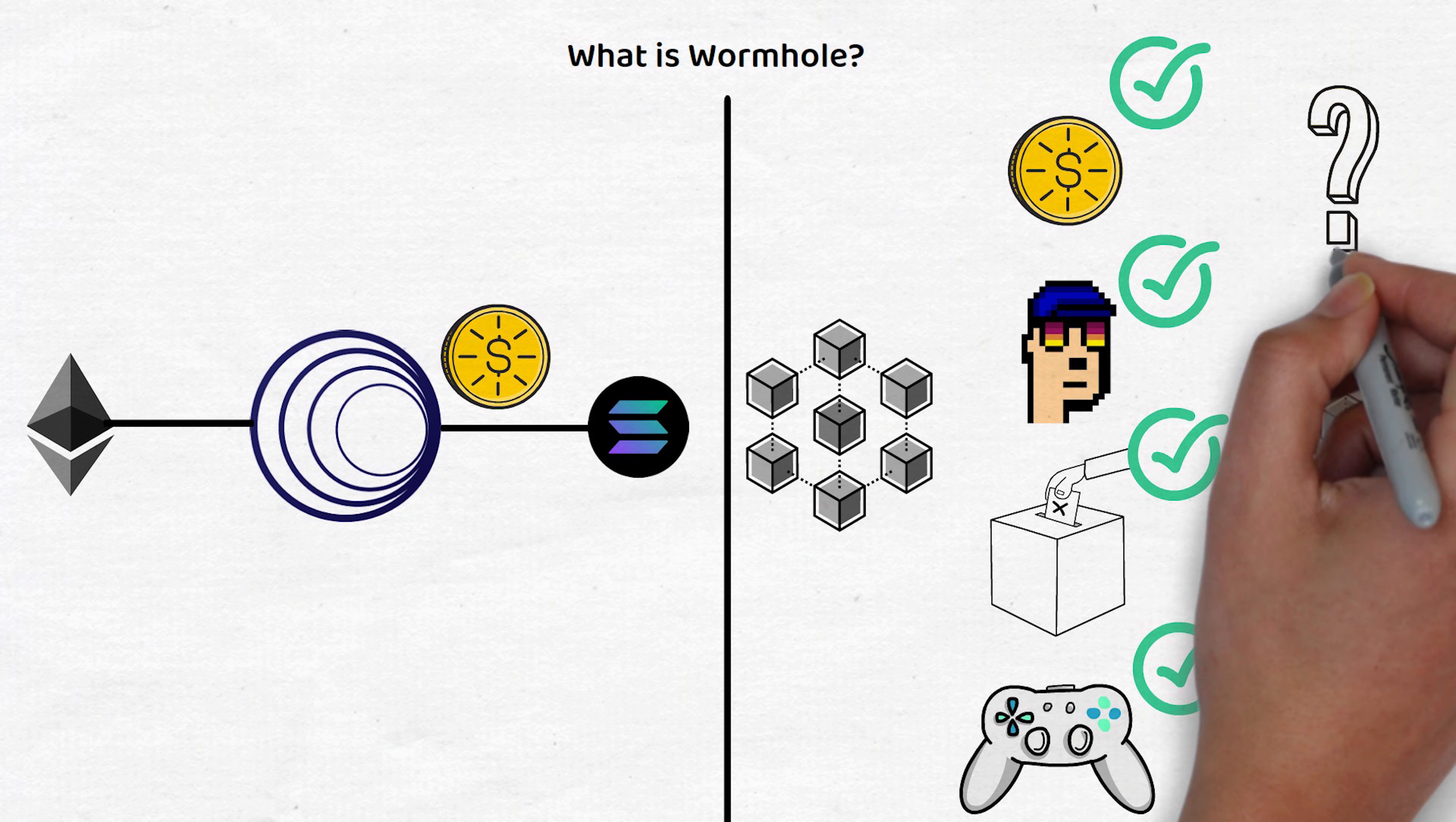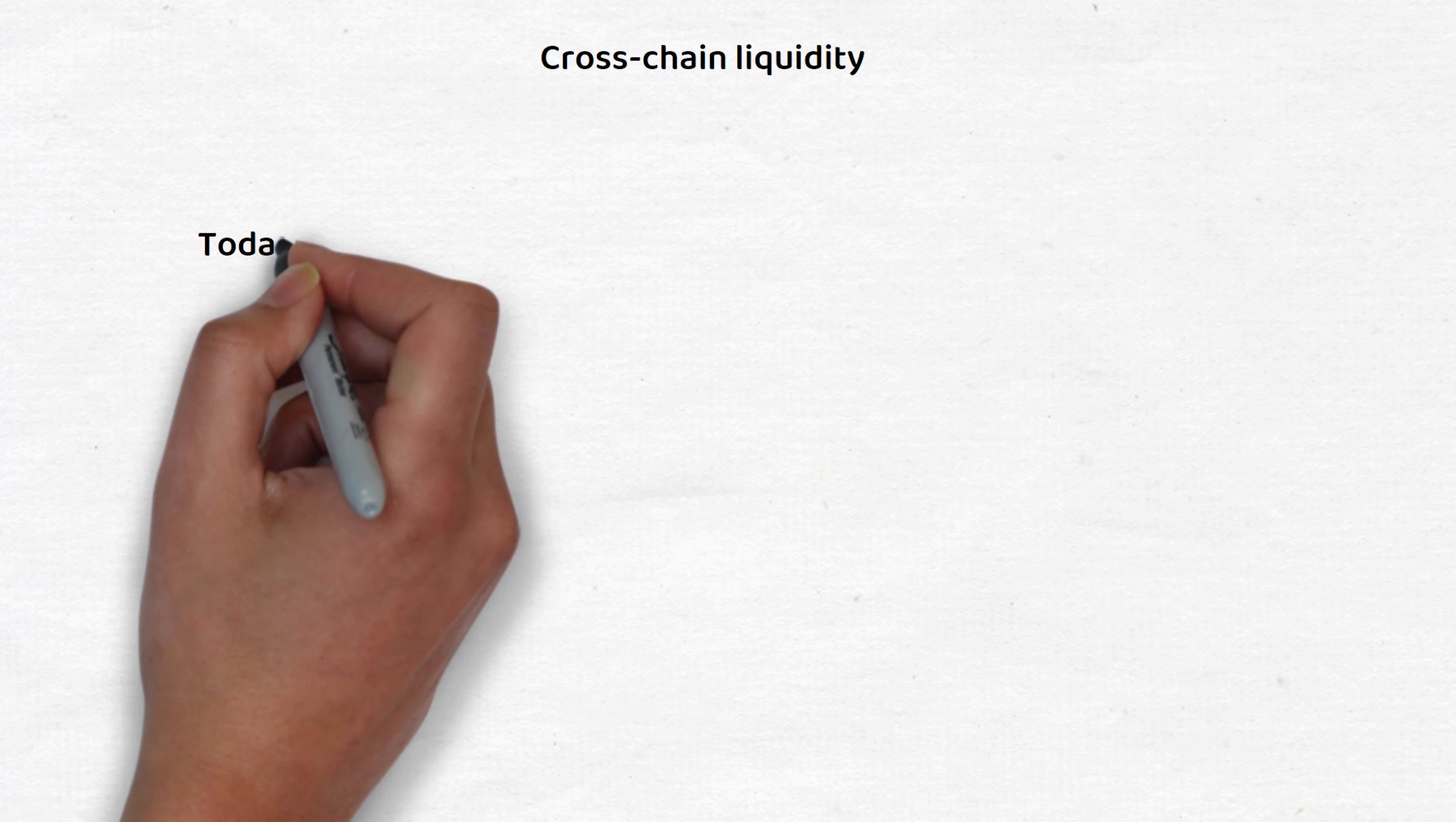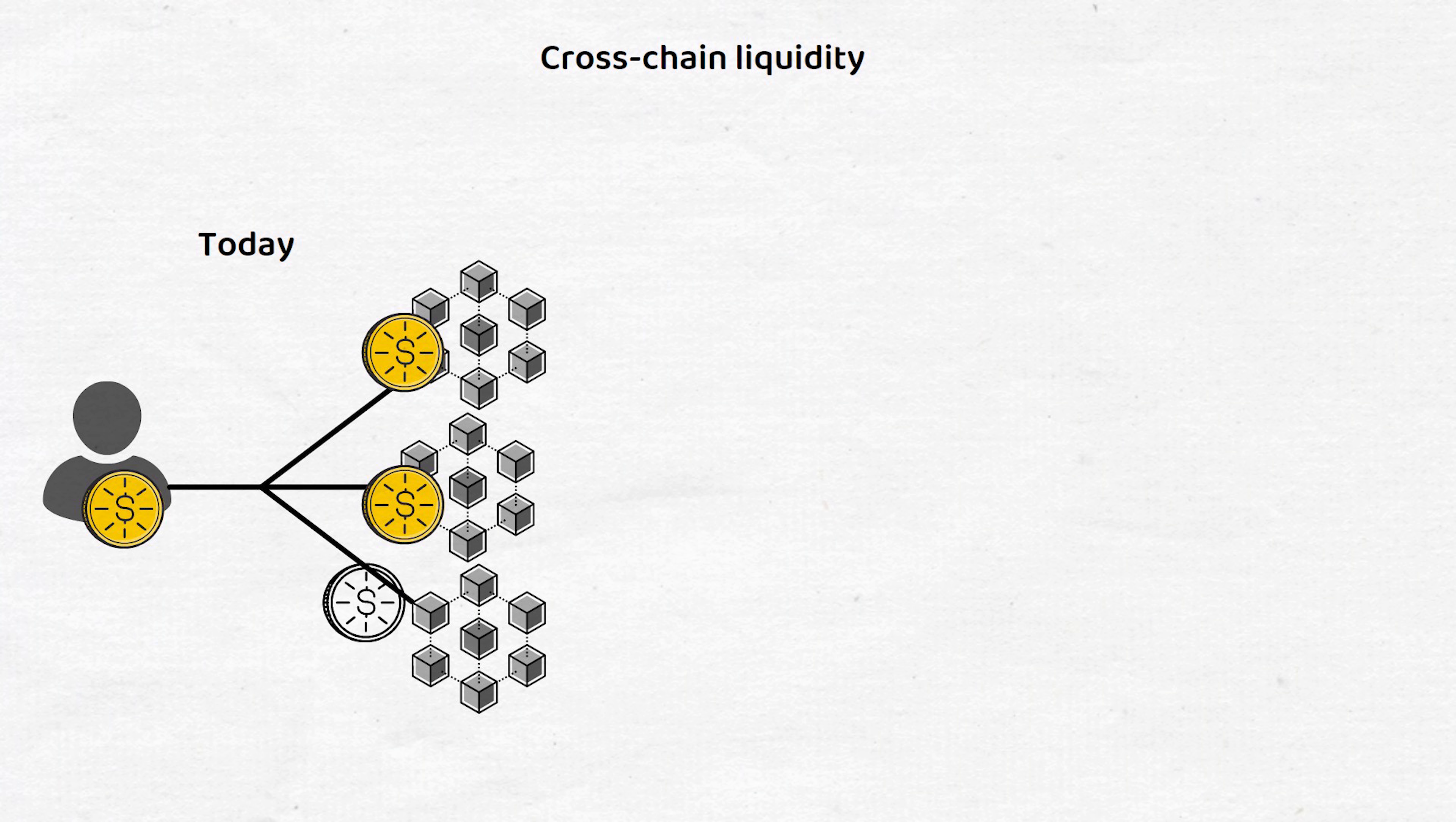But what problem does Wormhole specifically look to solve? The answer is cross-chain liquidity. In today's blockchain environment, users deposit their funds across multiple blockchains to access various different opportunities.